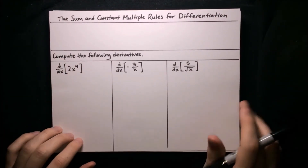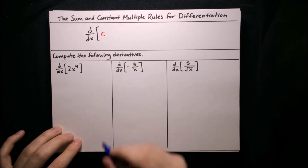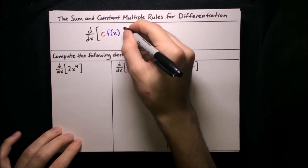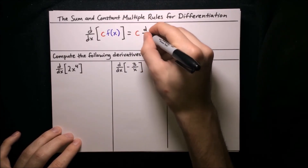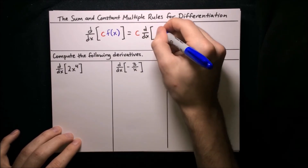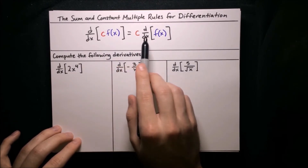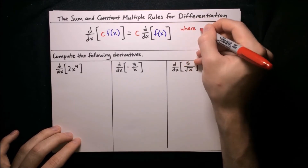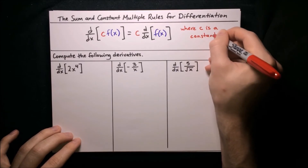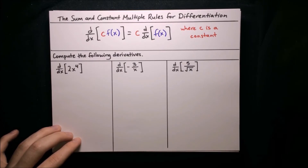Next, let's talk about the constant multiple rule. The constant multiple rule says that if we want to differentiate some constant c times some function f(x), we can factor that constant outside of the derivative and just apply the derivative to f(x). One thing to be careful of: c must be a constant — we can't factor out any variables. It has to be some kind of number like 1, 2, 3, negative 5, pi, 8 thirds — any number, but it can't contain any x terms.